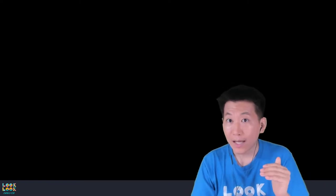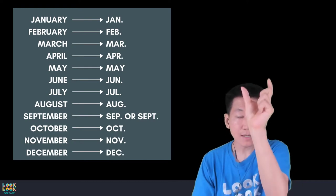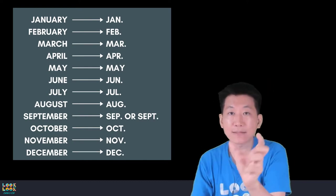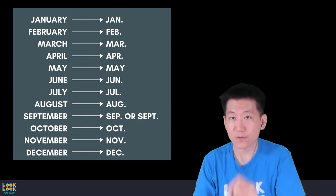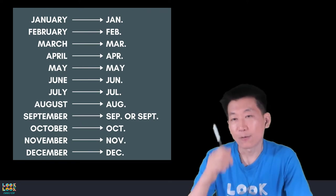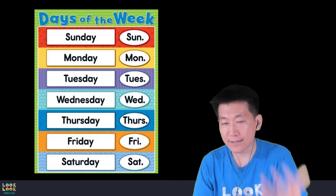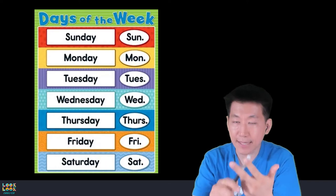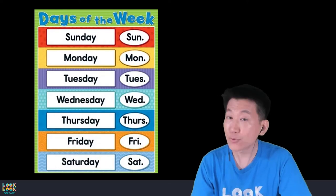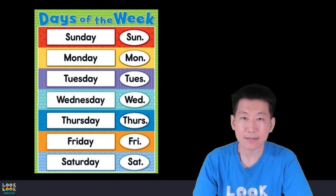그 다음에 월과 요일을 앞에 있는 이니셜, 특히 세 글자를 따서 사용합니다. January 같은 경우는 JAN, February 같은 경우는 FEB 이런 식으로. 그 다음에 월, 화, 수, 목, 금, 토, 일: Monday, Tuesday, Wednesday, Thursday, Friday, Saturday, Sunday. 거기에서 Tuesday하고 Thursday만 빼고요, 나머지 앞에 있는 세 글자만 가지고 추약하면 됩니다. Tuesday는 T-U-E-S, Thursday는 T-H-U-R-S. 이 정도 정리하면 되겠습니다.